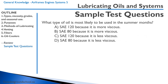Quiz question: What type of oil is most likely to be used in the summer months? The correct answer is SAE 120 because it is more viscous. You want a thicker oil in the summer months so that when it heats up, it doesn't become really thin.